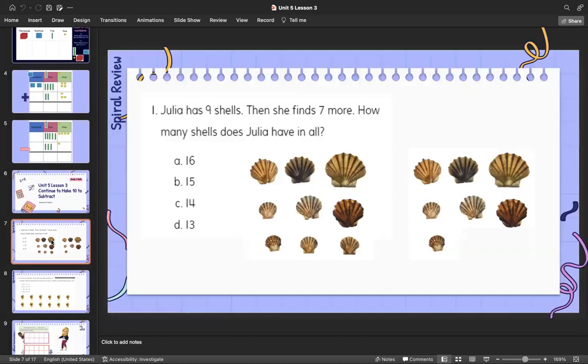Jumping over to the spiral review. In all, does it signify addition or subtraction? The goal is to eliminate ones, the numbers at the bottom A, B, C, or D, that do not make sense. Pause and work with your learning coach.